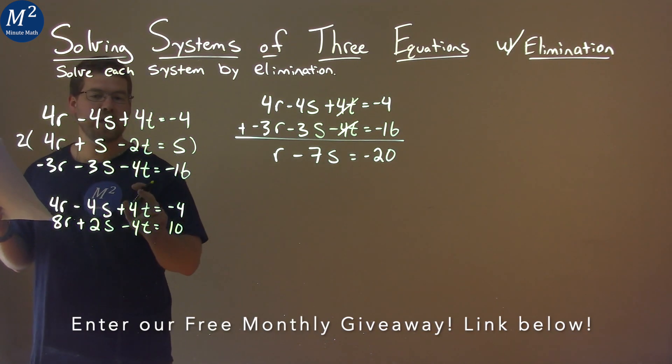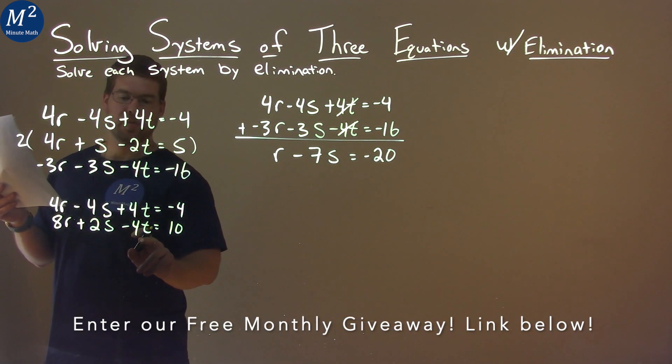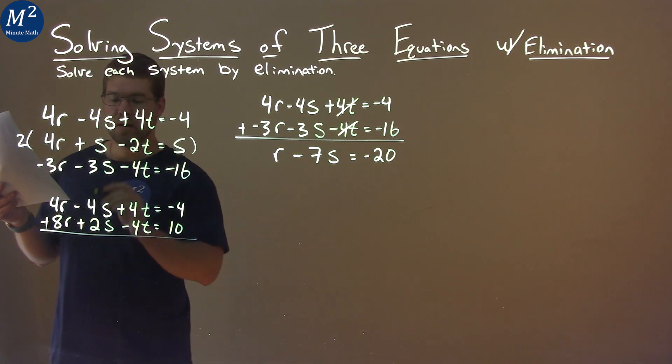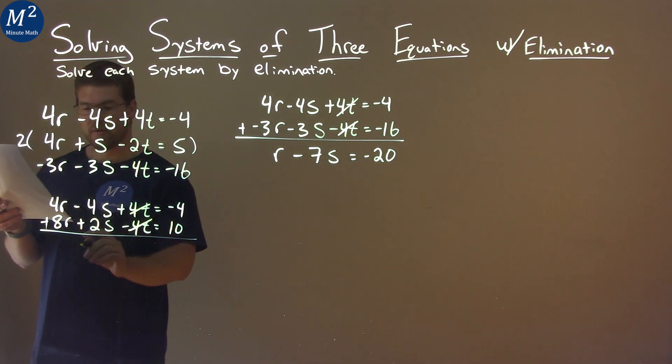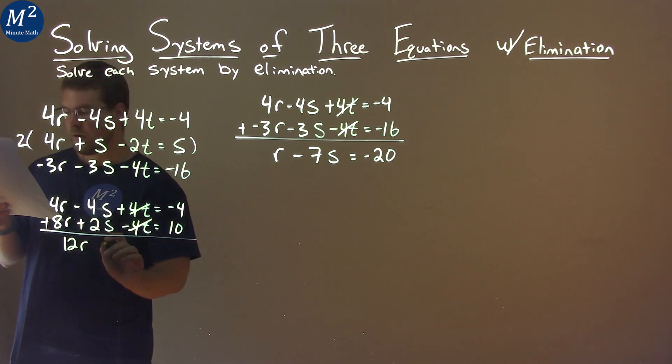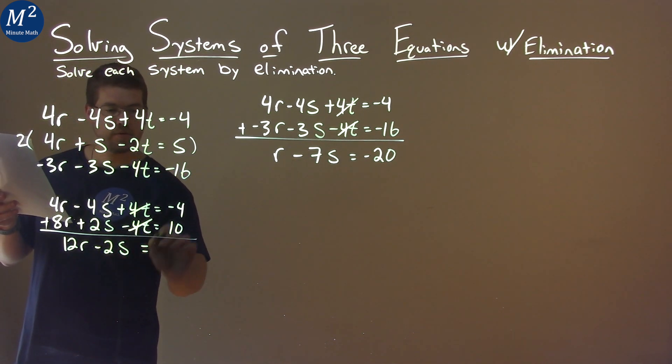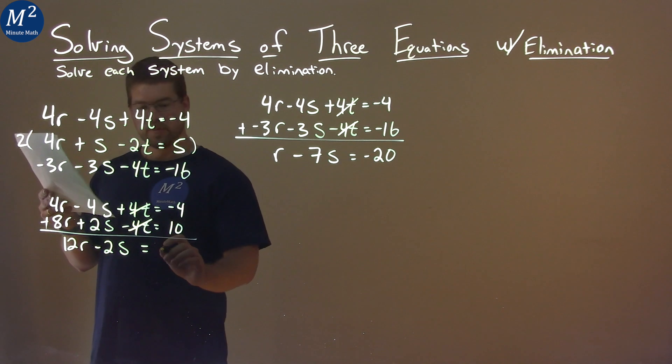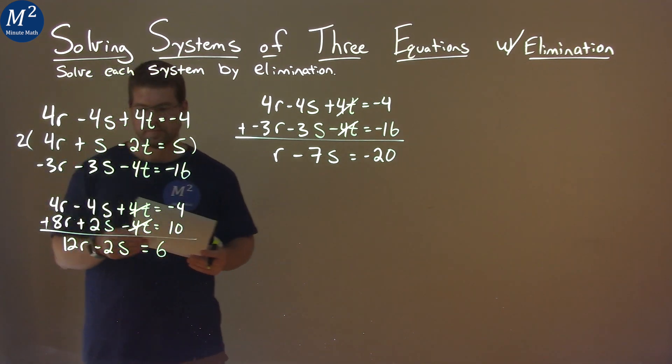And we can see now by doing that, we can eliminate the t value or t variable. So the 4t's will cancel there. We add them together and we have 12r, then negative 4s plus 2s is negative 2s equals negative 4 plus 10, which is positive 6.